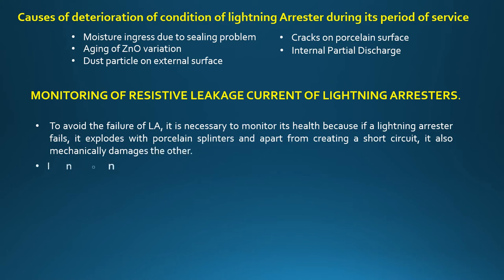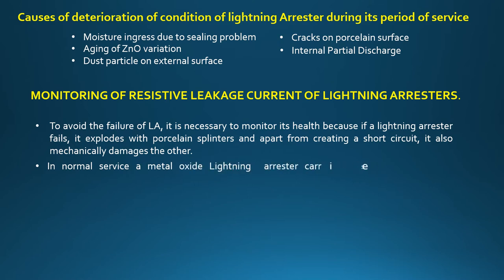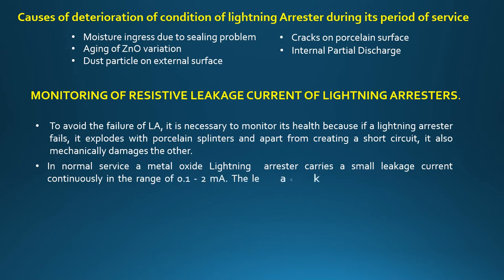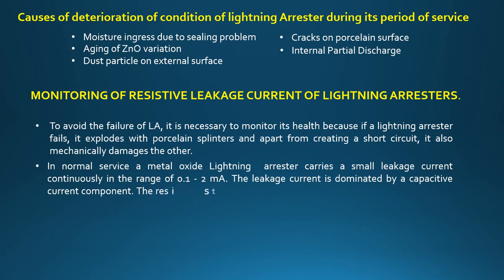In normal service, a metal oxide lightning arrester carries a small leakage current continuously in the range of 0.1 to 2 milliampere. The leakage current is dominated by a capacitive current component. The resistive component may be in the range of 5 to 25 percent of the capacitive component.